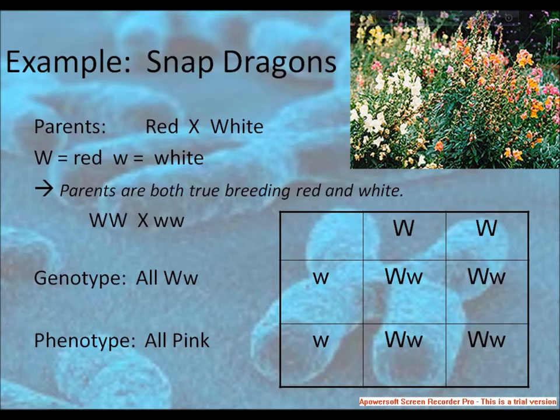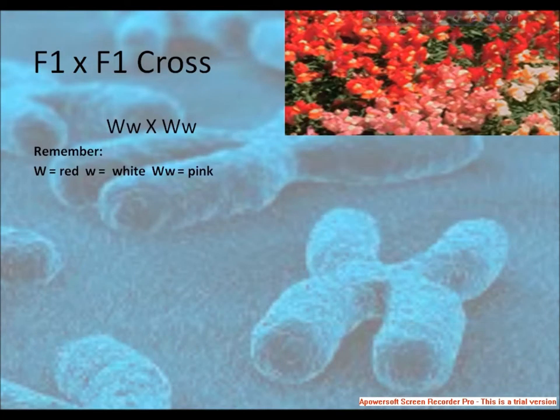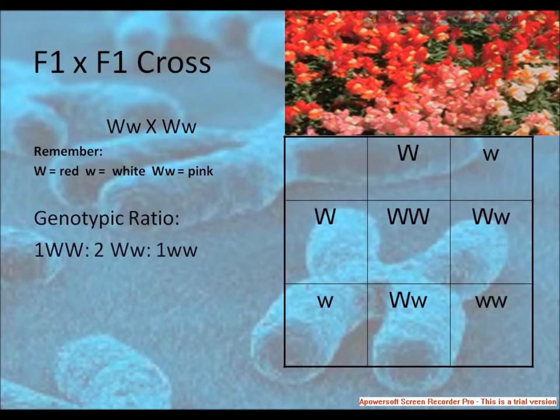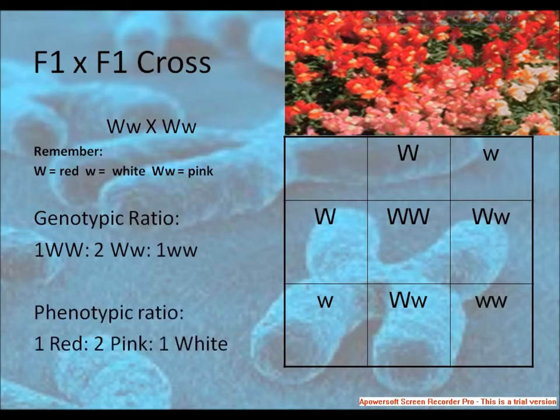After that, when we go to the F2 generation, it gives red, white, and pink. The genotype ratio is 1:2:1, and the phenotype ratio is also 1:2:1 — 1 red, 2 pink, and 1 white. In this case, the red color-producing gene is not completely dominant over the allele producing white color. So the genotypic and phenotypic ratio is the same, equal to 1:2:1.